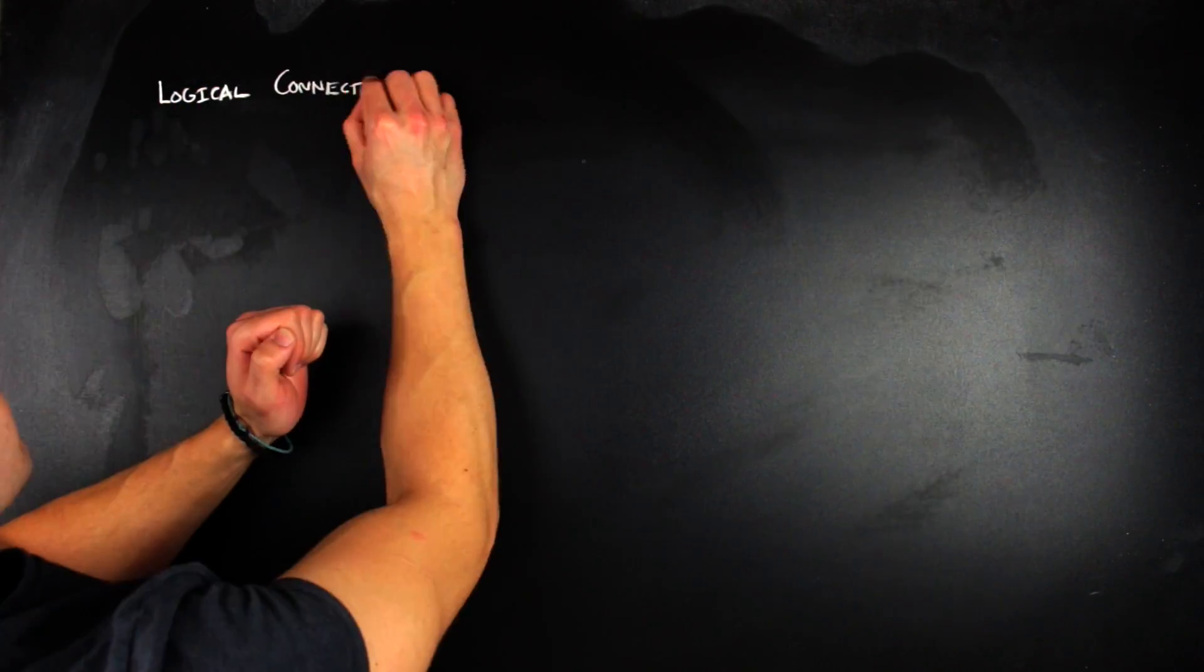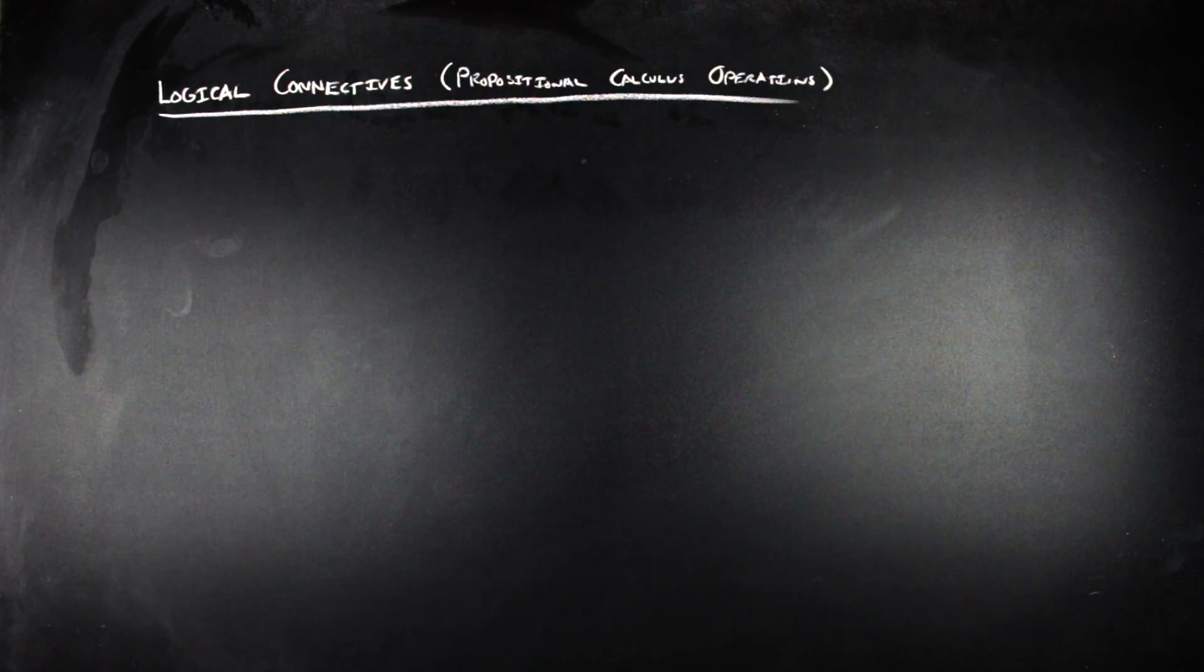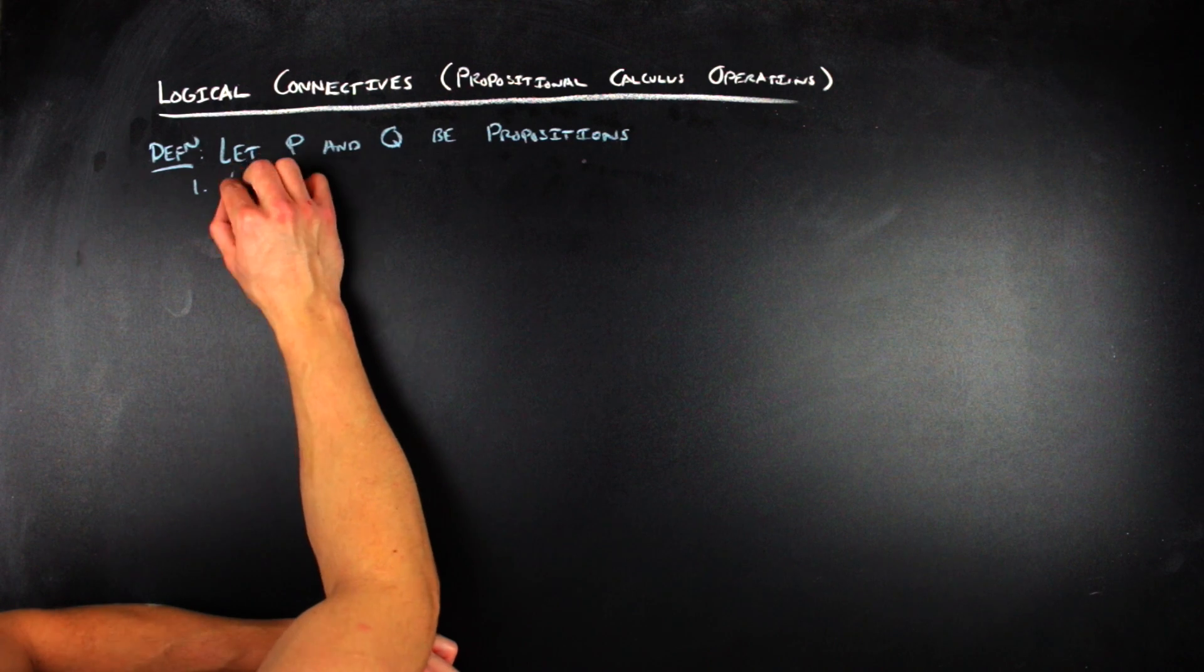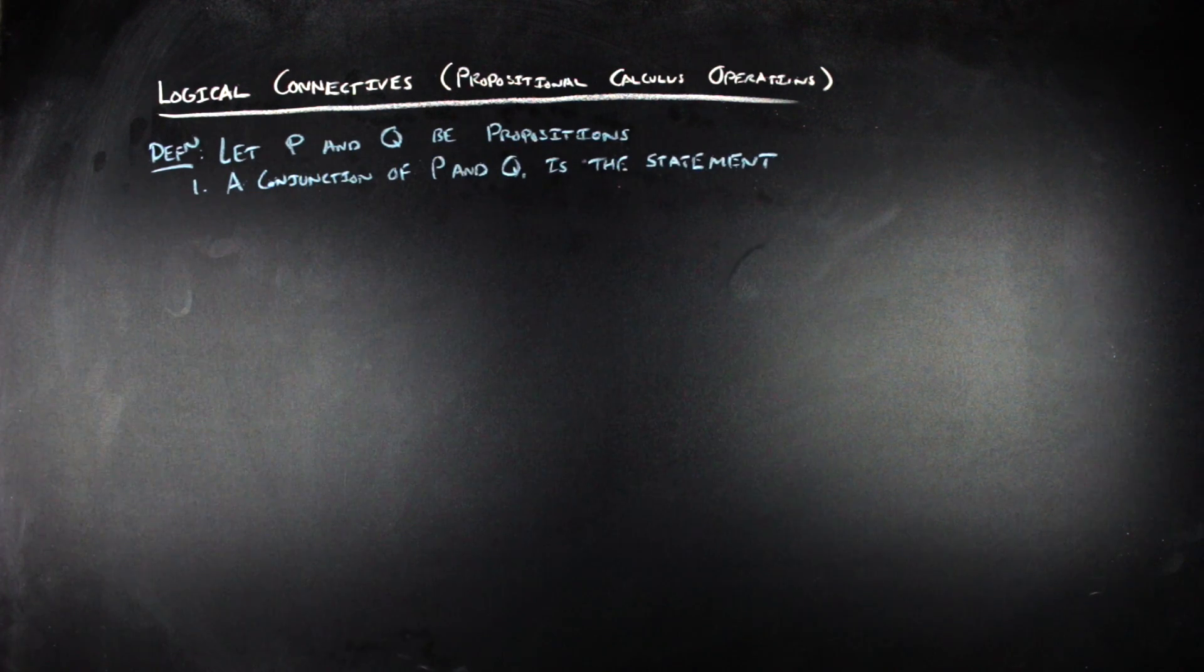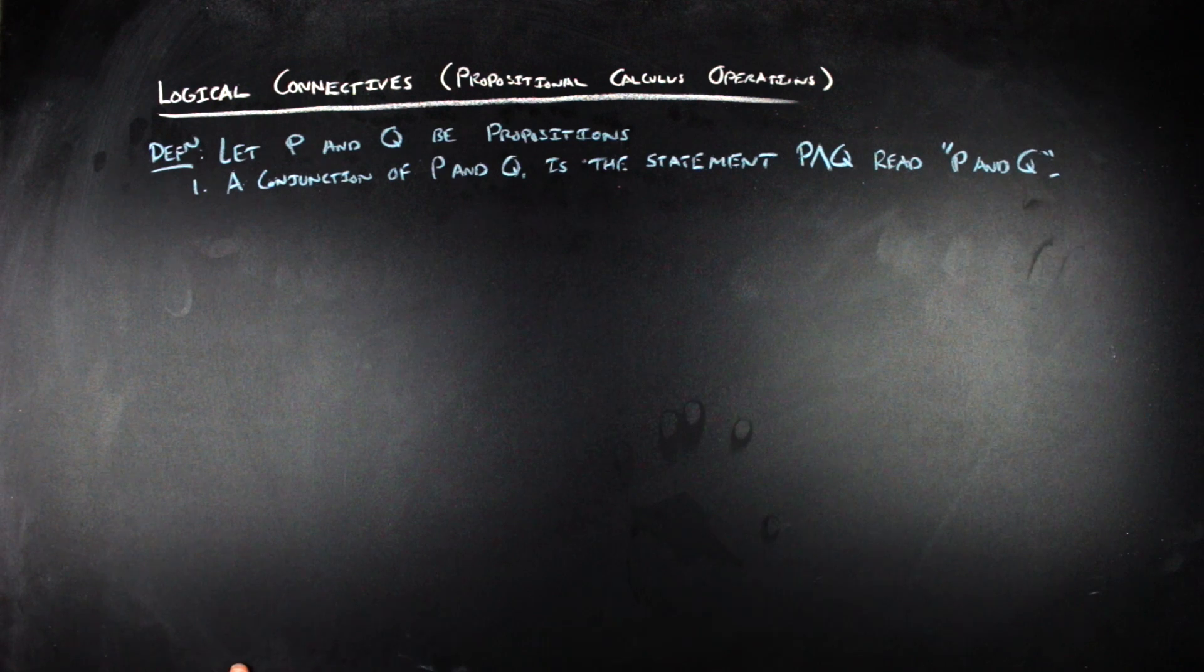So by definition, if you have two propositions, P and Q, then one, the conjunction of P and Q is the statement P wedge Q, which is read as P and Q.